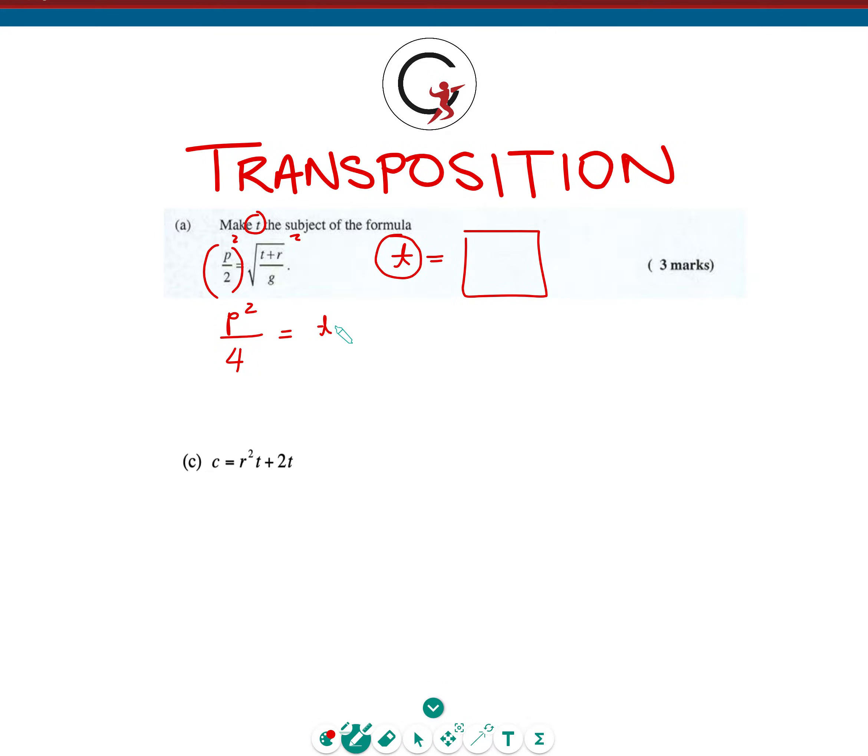Now the square root sign is gone, which has now exposed this underlying layer. The next thing you need to realize is that T plus R are both being divided by G, which means that G is the next layer we need to eliminate. The way that we do that is by multiplying by G on both sides. That way we're going to cancel this G, and G is going to end up on the left.